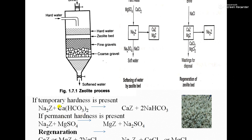Next is the regeneration reaction. After treating many liters of water, Na₂Z is converted to CaZ and MgZ, meaning the exchange capacity of the zeolite bed is exhausted. We regenerate the bed using brine solution — 10% NaCl solution. CaZ reacts with NaCl to give Na₂Z + CaCl₂, and MgZ reacts with NaCl to give Na₂Z + MgCl₂, restoring the zeolite bed.